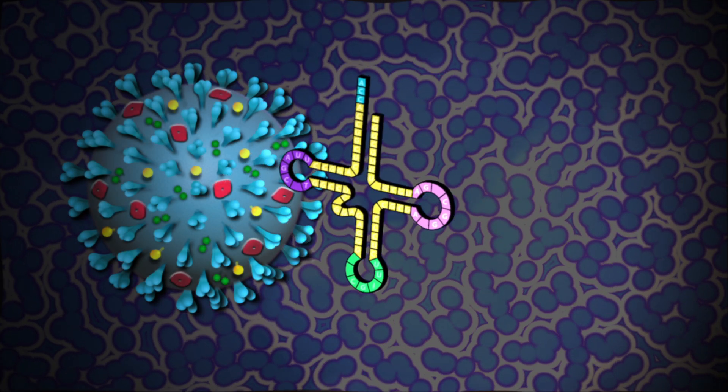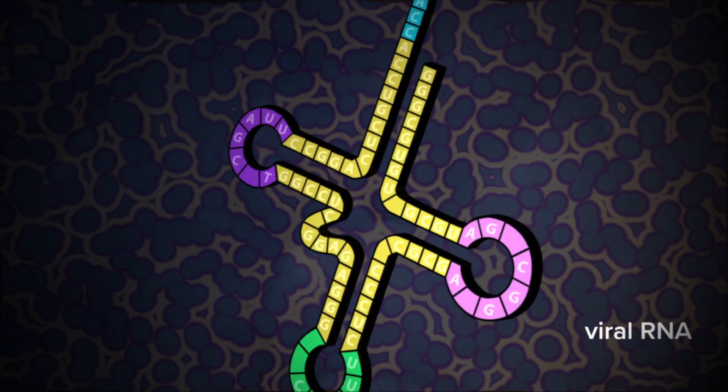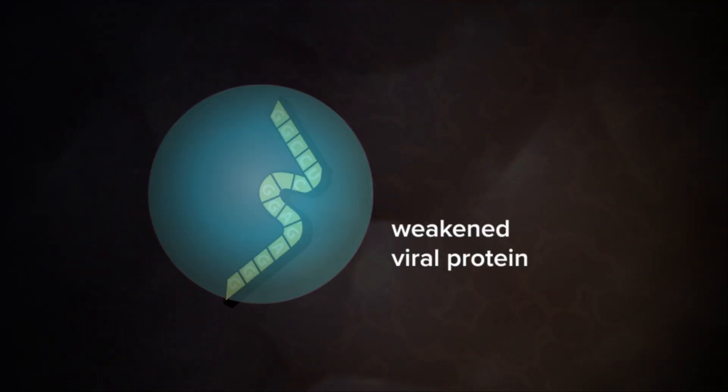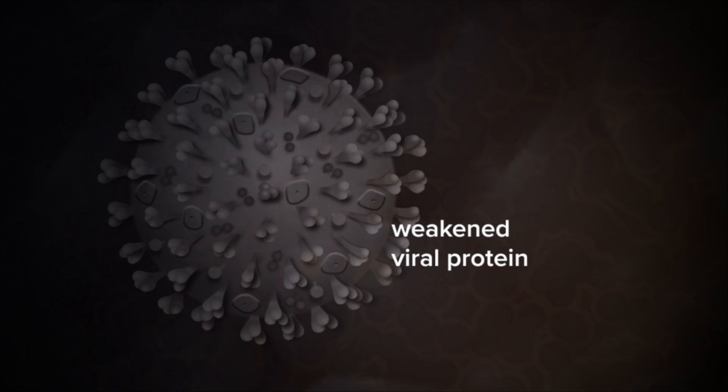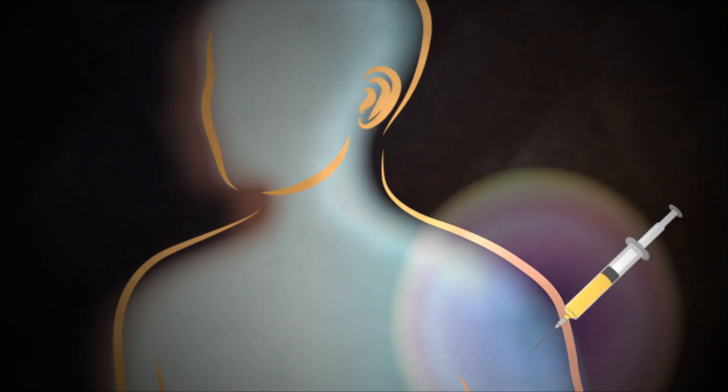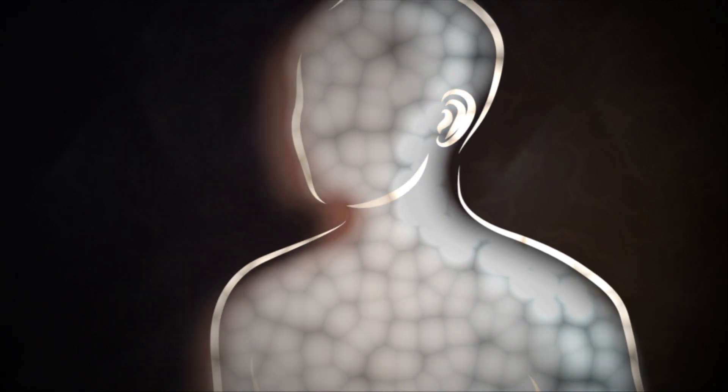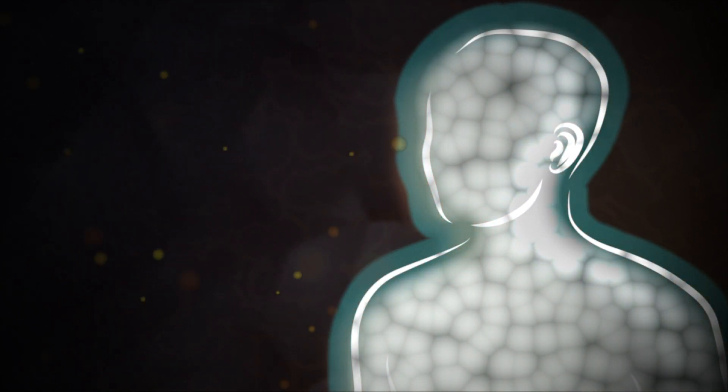How would a vaccine work? A vaccine can be created by clipping out a segment of the virus's genetic code, then injecting that into a person whose cells will start producing a weakened, harmless version of the viral protein.